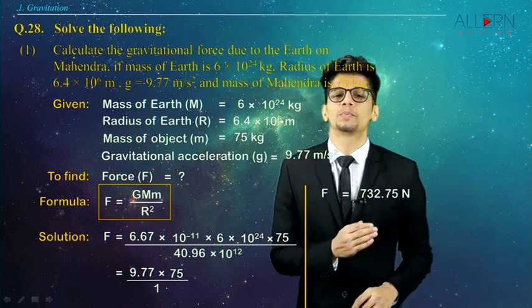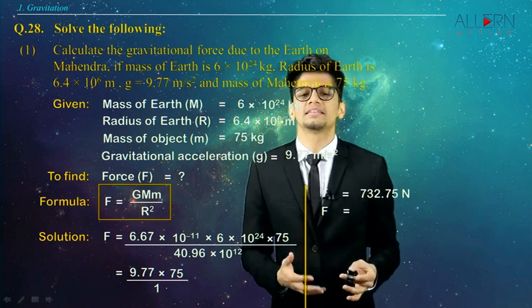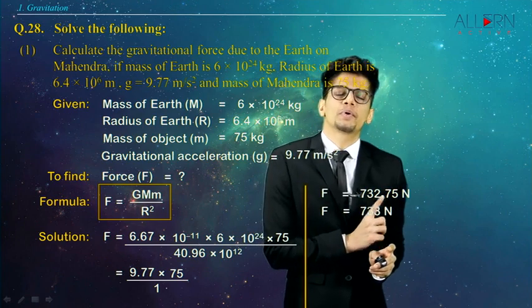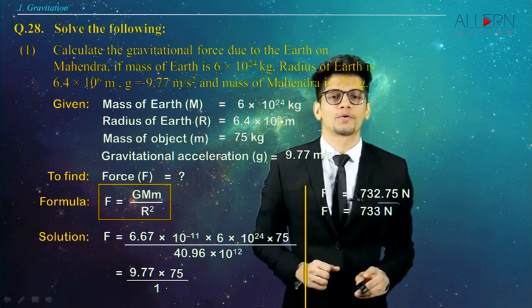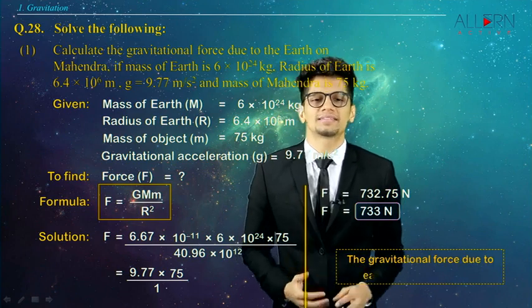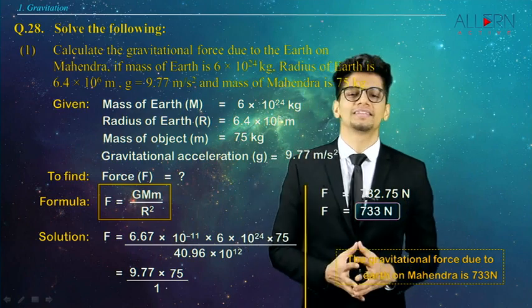This can also be written as 733 Newtons. Even if you keep the answer as 732.75 Newtons, you won't get it wrong. So the final answer is 733 Newtons. The gravitational force due to Earth on Mahindra is 733 Newtons.